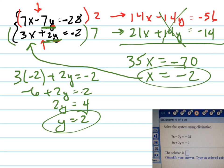And to check to make sure I did it right, I'm going to plug negative 2 in for x on the top equation, the one I didn't use yet, and positive 2 in for y. Negative 2 times 7 is negative 14, plus negative 14 does equal negative 28. So I know that's the right answer.